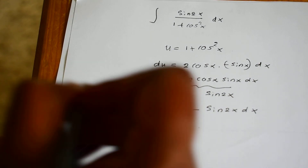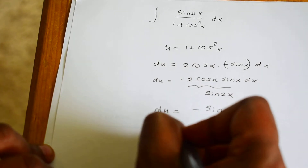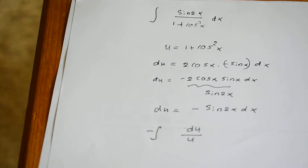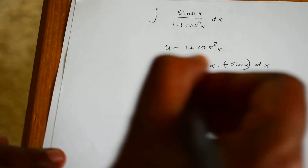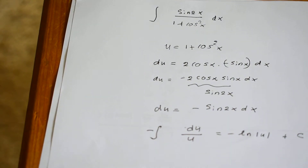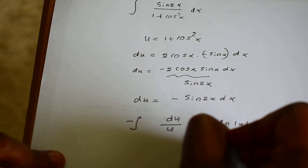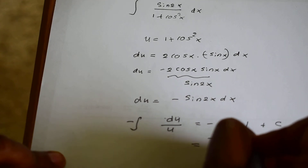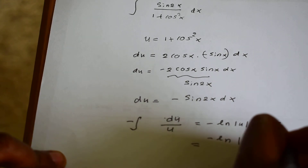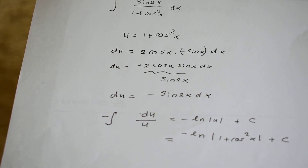Now you can rewrite this integral in terms of u. You can write negative du divided by u, which is basically the negative integral of 1 over u with respect to u. This integral equals negative ln of the absolute value of u plus C. Rewriting in terms of x, your final answer is negative ln of 1 plus cosine squared x plus C.